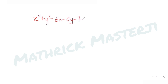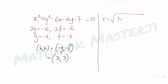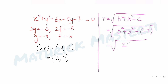The second circle's equation is x² + y² - 6x - 6y - 7 = 0. Comparing with standard form: 2g = -6 so g = -3, and 2f = -6 so f = -3. The center is (-g, -f) = (3, 3). The radius is √(3² + 3² - (-7)) = √(9 + 9 + 7) = √25 = 5.